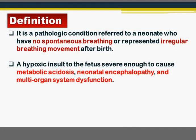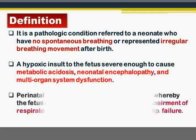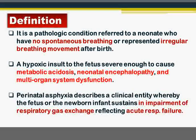Birth asphyxia is a birth injury. We can classify birth injuries into two types: hypoxic ischemic injuries and physical injuries. Physical injuries are called birth trauma, which will be the subject of the next lecture. Hypoxic ischemic injuries are called hypoxic ischemic encephalopathy because they affect mainly the brain, or we can call it perinatal asphyxia. Perinatal asphyxia describes a clinical entity whereby the fetus or newborn infant sustains an impairment of respiratory gaseous exchange.